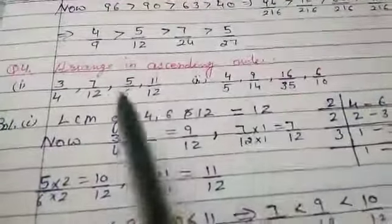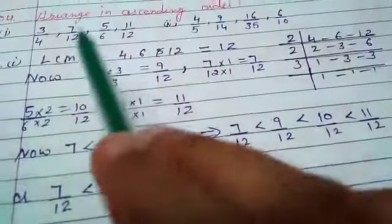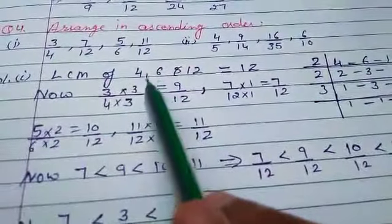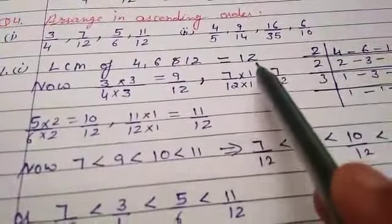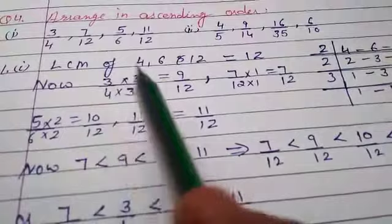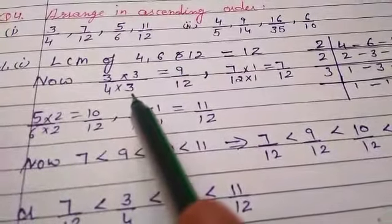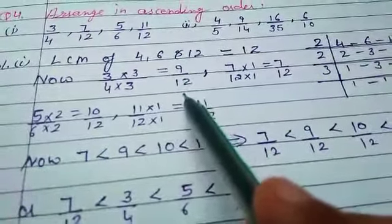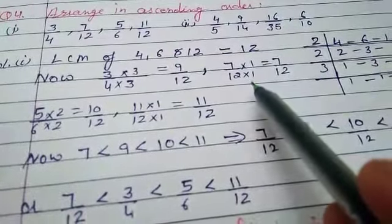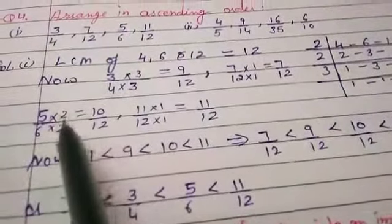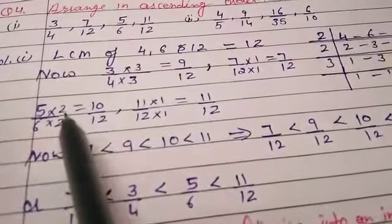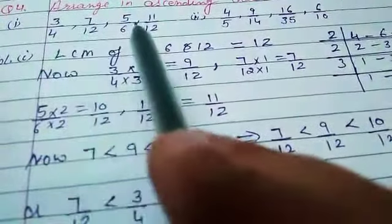Next question, there are also two parts, I will do only one part. We have unlike fractions, so first step is finding the LCM. The LCM is 12. Converting: 3/4, 7/12, 5/6, and 11/12.